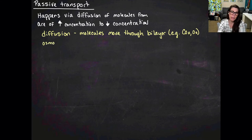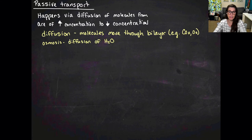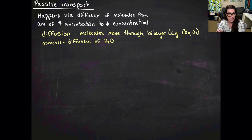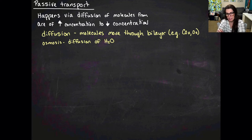The next type is osmosis, which is simply the diffusion of water. It actually happens through special structures in the cell membrane called aquaporins, but that's beyond the scope of this class, so we won't focus on those.